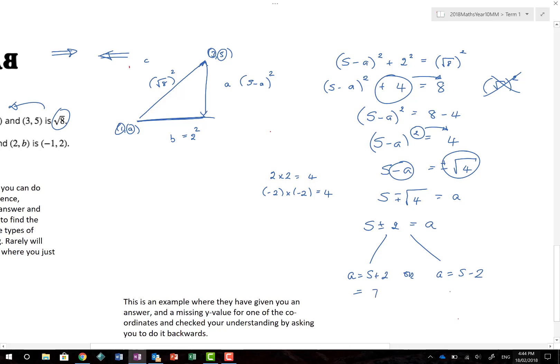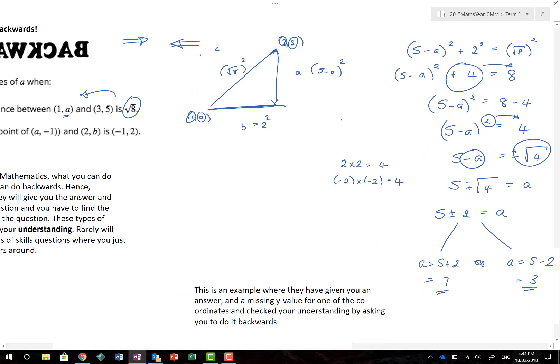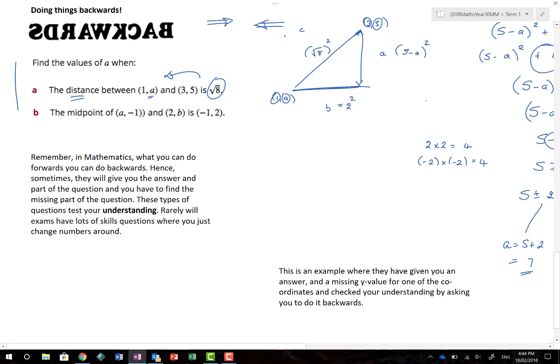So, that's 7 or 3. And actually, that means that both of those values of A will give me a triangle with the square root of 8.